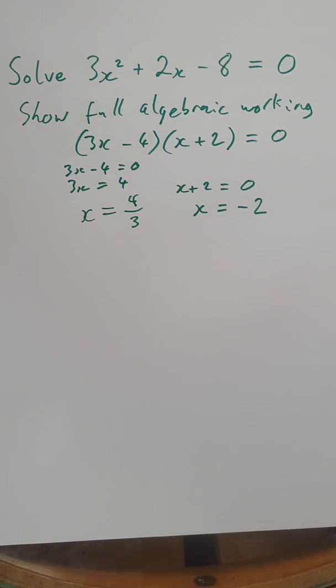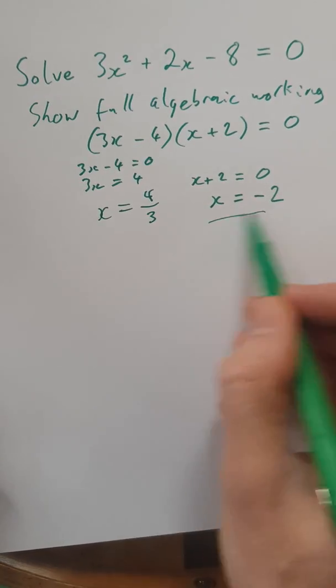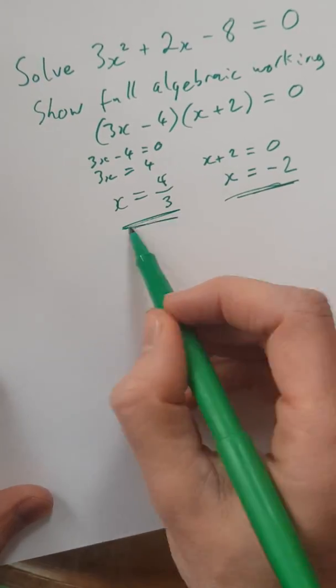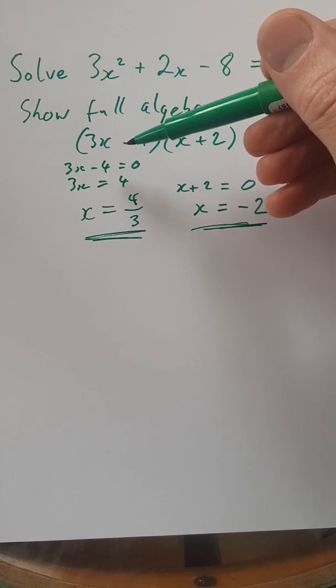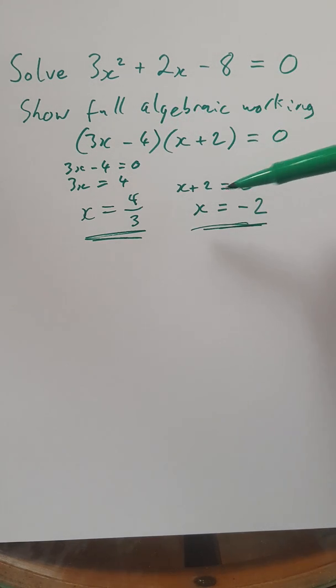When you present what you can see there to an examiner, they are going to read that from the top down. So they're going to see that you've factorised it here. And then they're going to see that you've set each of those brackets separately equal to 0 and solve them to get the two final answers. They've got absolutely no idea that you've actually solved this problem in reverse.